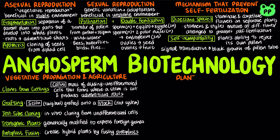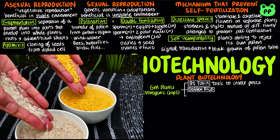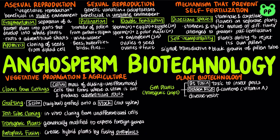Plant biotechnology refers to the innovations in the use of plants to make useful products. It can more specifically refer to the use of genetically modified organisms in agriculture and industry. Genetically modified plants, or transgenic crops, have been developed to produce toxins such as Bt toxin that is toxic to insect pests. Transgenic crops have also been developed to improve nutritional quality — for example, golden rice is a transgenic variety being developed to address beta-carotene or vitamin A deficiency. Transgenic crops can also improve disease resistance and herbicide tolerance.